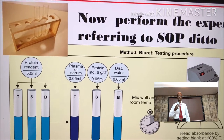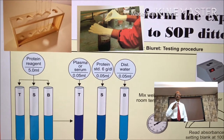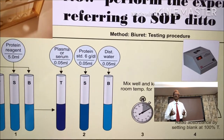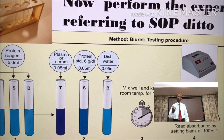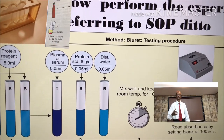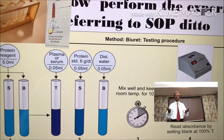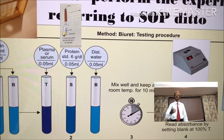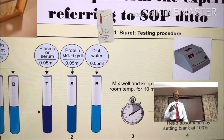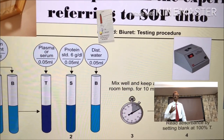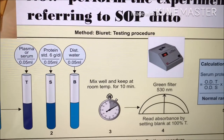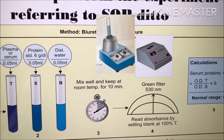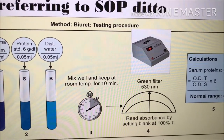In each test tube, by using the dispenser, add protein reagent 5 ml. Then in the test tube T, add serum 0.05 ml. In the standard, add protein standard 0.05 ml. And in the blank, add 0.05 ml distilled water. Mix well the contents in the tube and keep at room temperature for 10 minutes precisely.